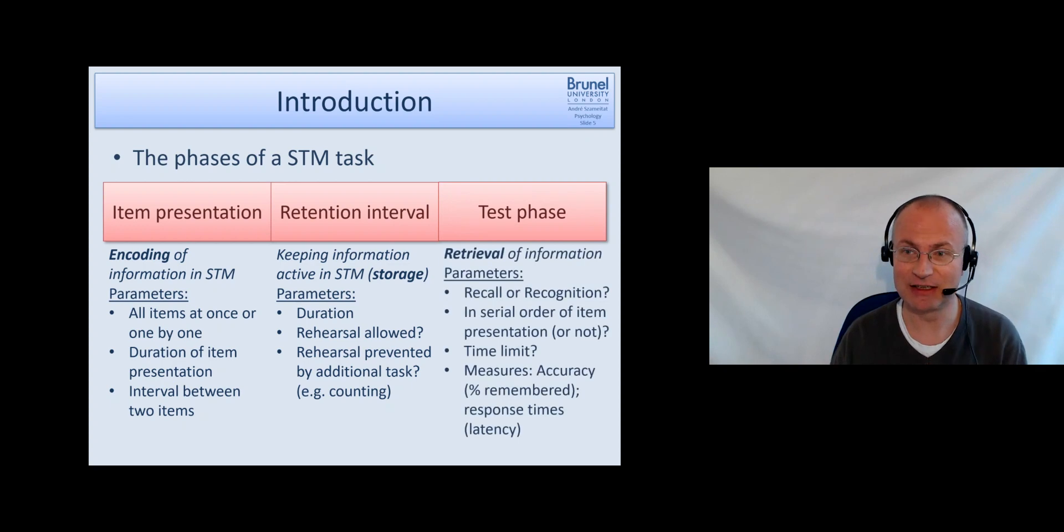And then we have the test phase, and this is the retrieval of information from the storage. This is the third phase and the third part of our memory system. First of all, we can ask: do we use recall or recognition? So what's the difference between the two? Recall, or often also called free recall, means that in the example of a word list, you just give participants a blank sheet of paper and a pen and they should write down the words which you presented before. So you don't have any help or cue, and this is usually the most difficult variant of this retrieval of information.